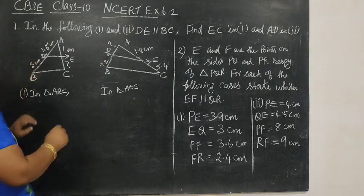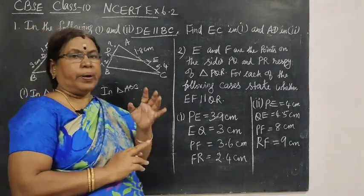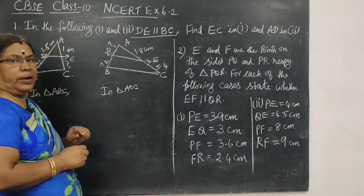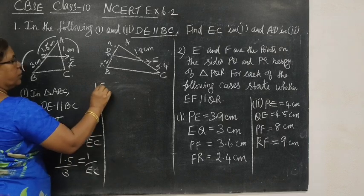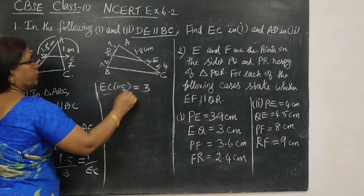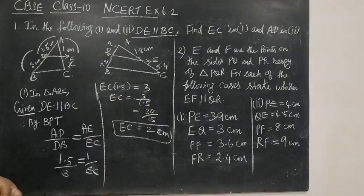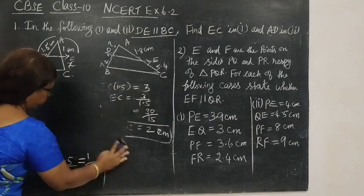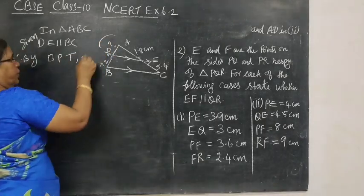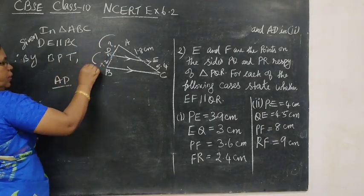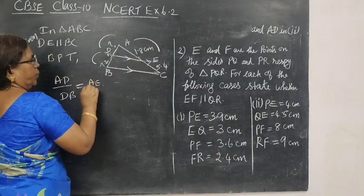In the first question, we are given DE parallel to BC. Definitely, the condition should be given, parallel to any one of the sides, so we can apply BPT. Now, cross multiply EC into 1.5 equal to 3. EC equal to 3 by 1.5, so 2.